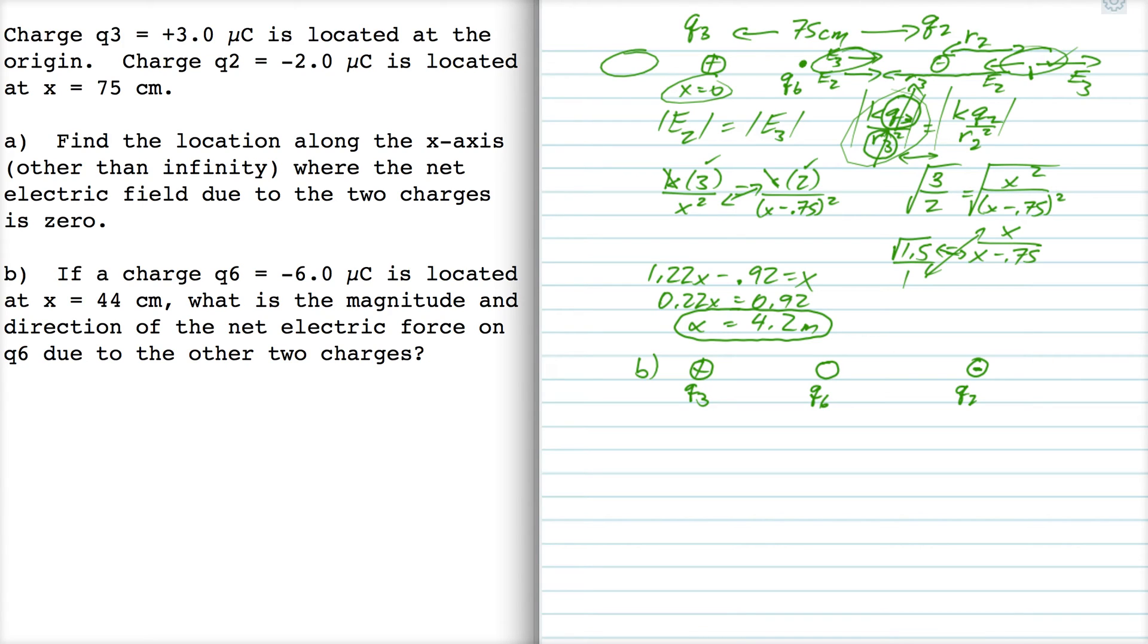Now, q6 is negative, and we want to know what is the magnitude and direction of the net electric force. Well, the electric force due to charge 3 is going to be attractive, and the electric force due to charge 2 is going to be repulsive, so they're going to point in the same direction—they're going to point to the left.